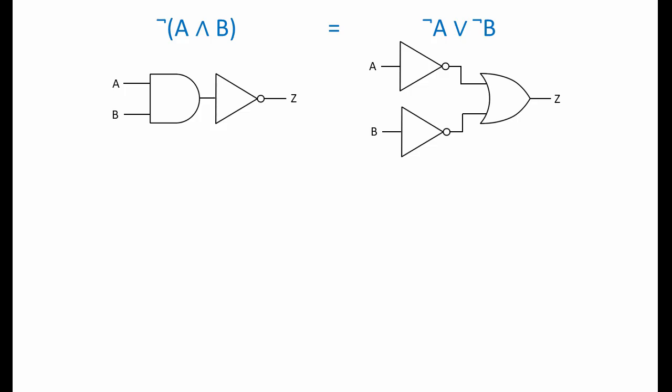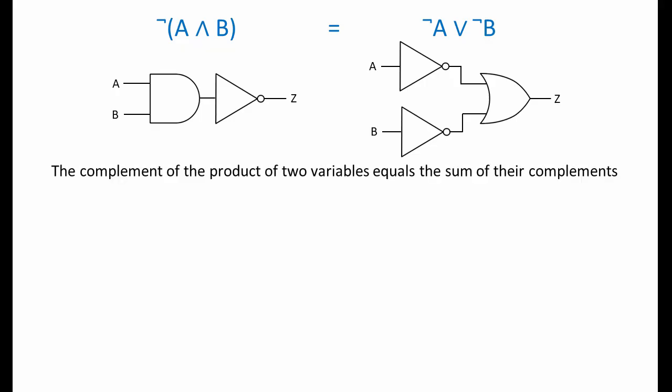The AND operation can be thought of as Boolean multiplication. When two numbers are multiplied together, we get their product. The complement of something is the result of performing a NOT operation on it. So a formal way to describe this equivalence is to say that the complement of the product of two variables equals the sum of their complements.